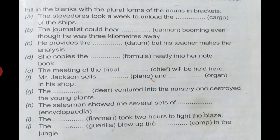Next exercise. Here two words are given, you have to write them in plural in the blanks. The stevedore took a week to unload the cargos, O so ES, of the ships. The journalist could hear cannons, simple S, booming even though he was three kilometers away. He provides the data, D-A-T-A, but his teacher makes the analysis. She copies the formulas, simple S, neatly into her notebook. The meeting of the tribal chiefs, S, will be held there. Mr. Jackson sells pianos - here O is at the end but we add simple S - and organs in his shop. The deer ventured into the nursery and destroyed the young plants.